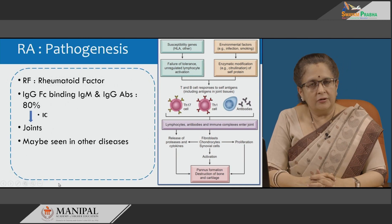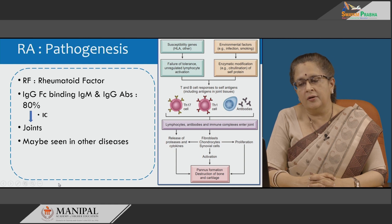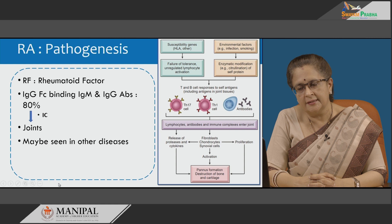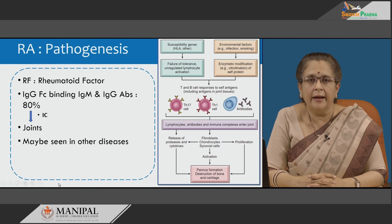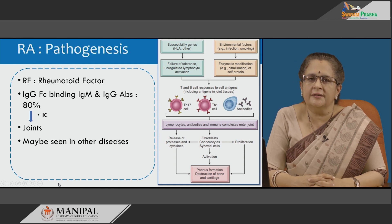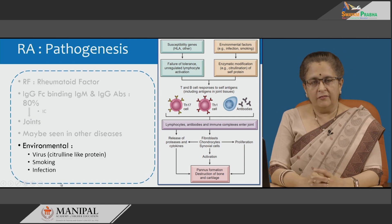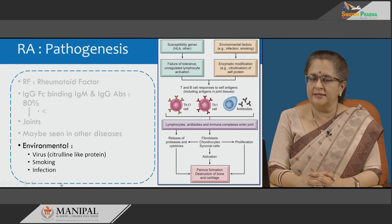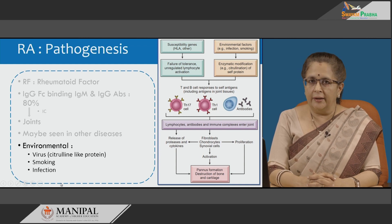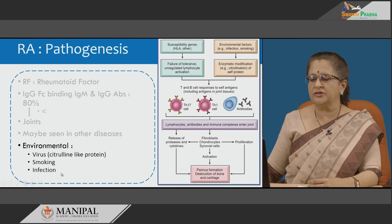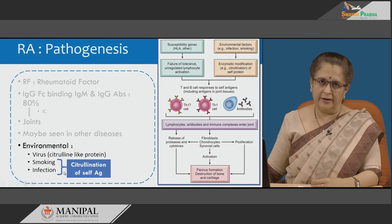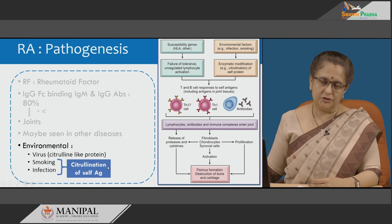Rheumatoid factor is a combination of IgM and IgG antibodies which bind to the Fc portion of IgG. It is seen in 80 percent of patients and is deposited as an immune complex within the joints, though it may also be seen in other diseases. Environmental factors responsible for ACPA production include viruses or microbes with epitopes similar to citrulline, as well as smoking and infection, which cause citrullination of self-antigens, producing CCPs.